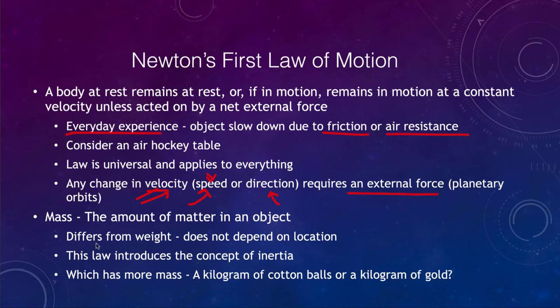Mass is different from weight — these are two very different items. Mass is the amount of matter within an object, whereas weight is the gravitational force pulling on it. The mass of an object does not change; anywhere you go in the universe, your mass stays the same. However, your weight would change. If you go to the moon, the amount of matter in you hasn't changed, but because the gravitational force on the moon is less, you will weigh less — by about a factor of six. If you stood on a scale on the moon, you would weigh a lot less than you do on Earth.